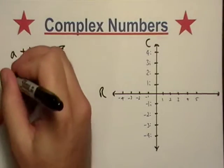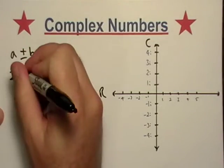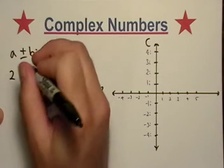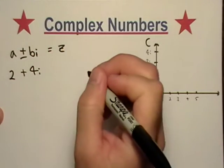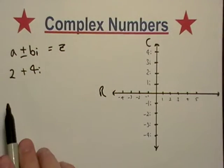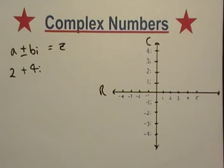So a real life example would be like 2 plus 4i. Okay, that's a complex number. And a complex number is a lot like the coordinate system.